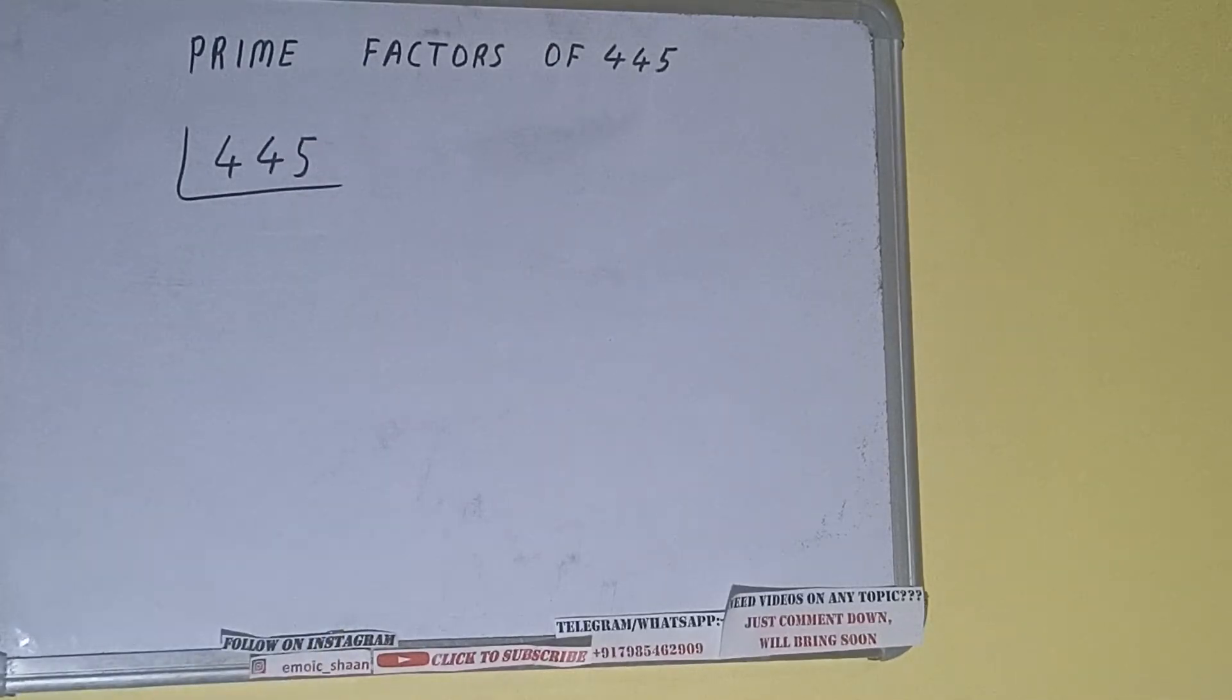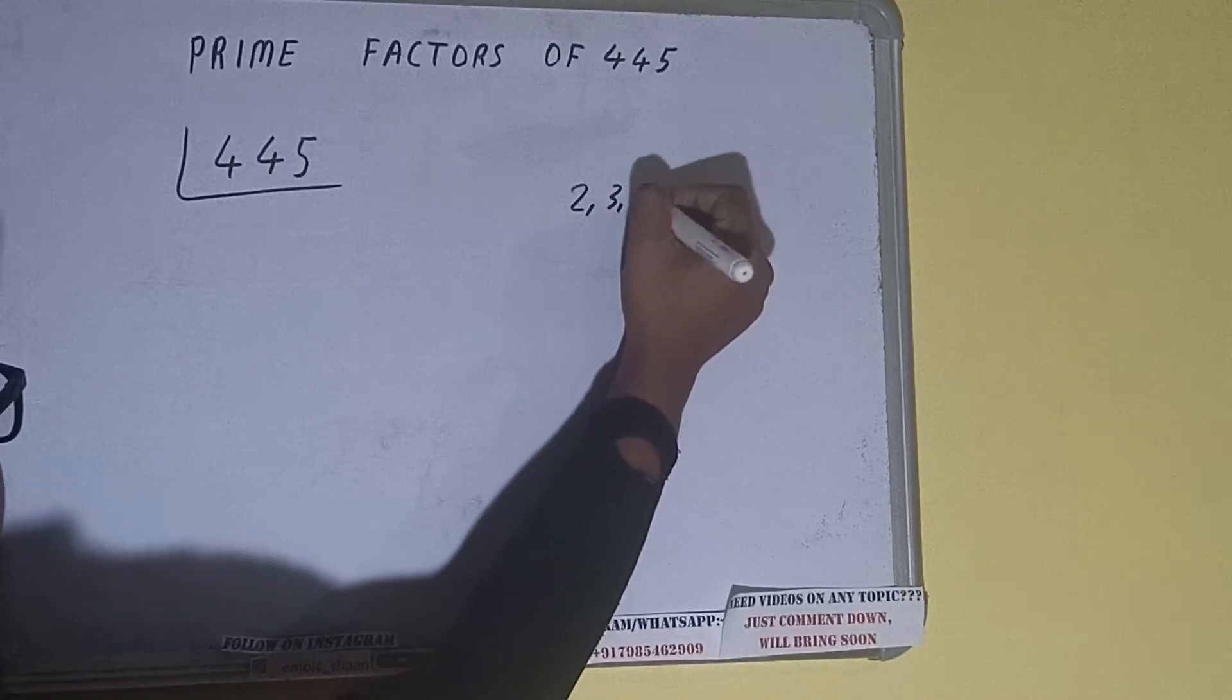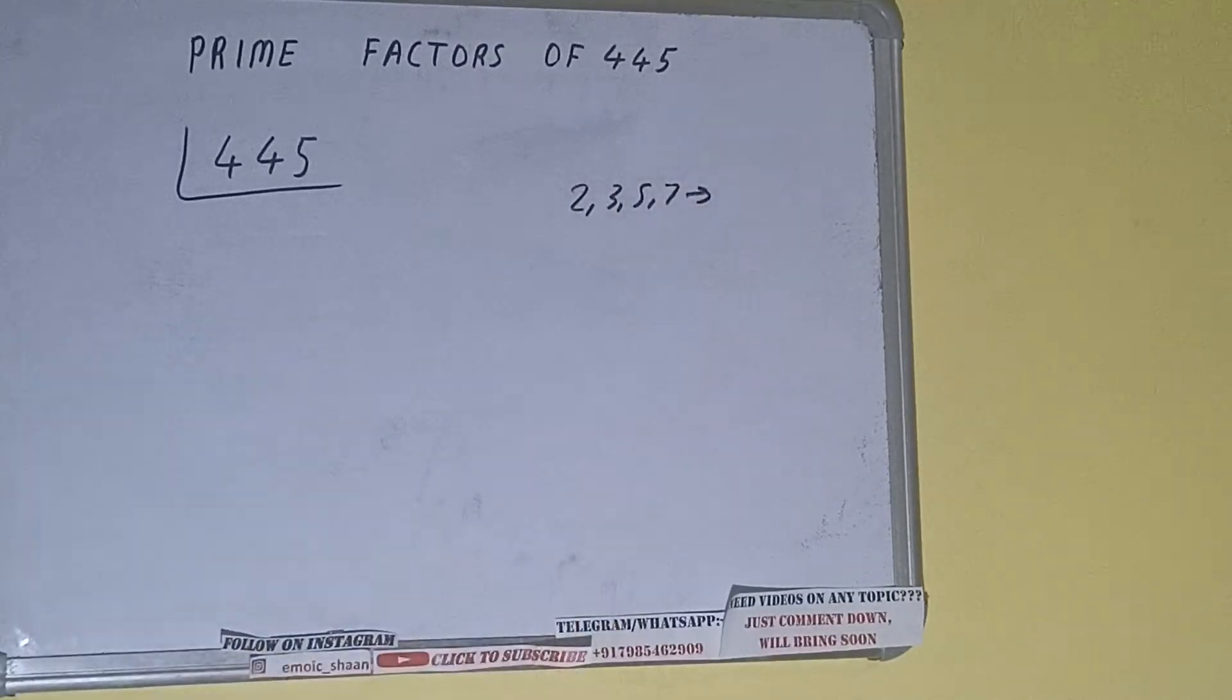The next thing we need to know about is what are prime numbers. So prime numbers are numbers that are divisible by one and the number itself, like two, three, five, seven, and so on. All right, so we'll check with the lowest prime number we have.